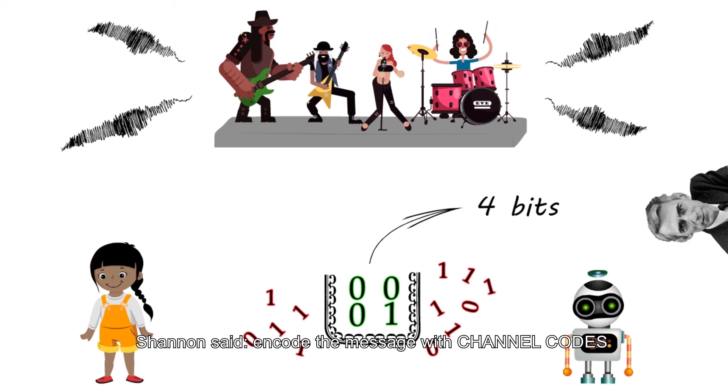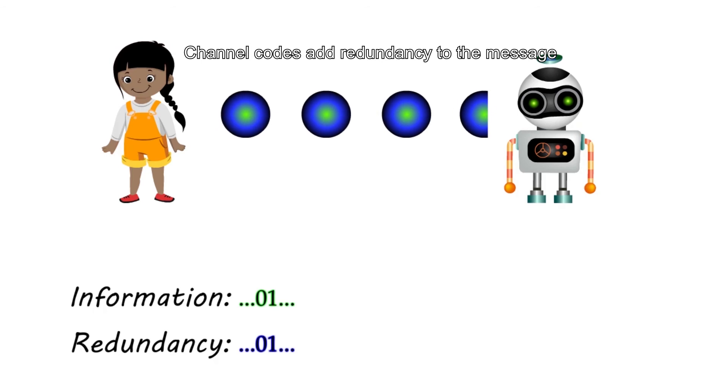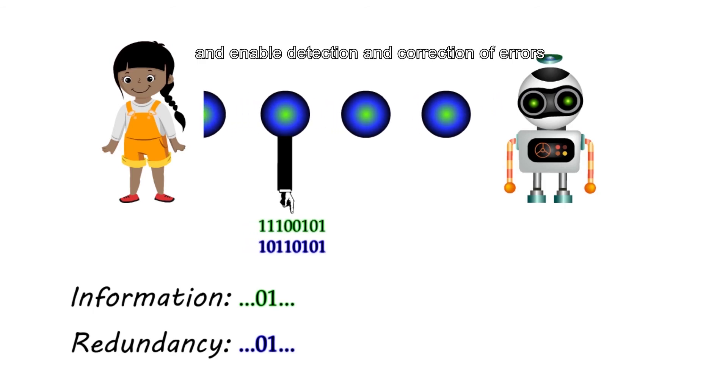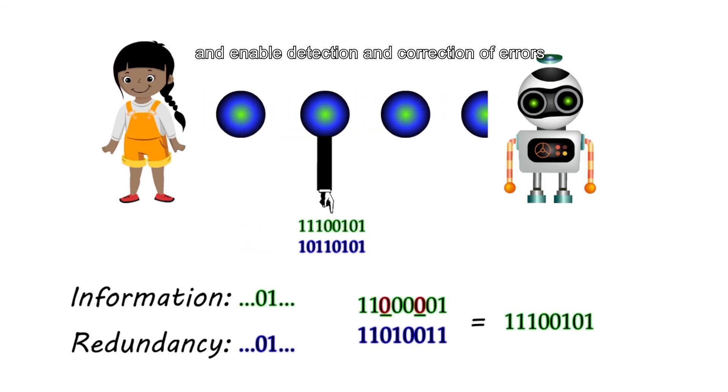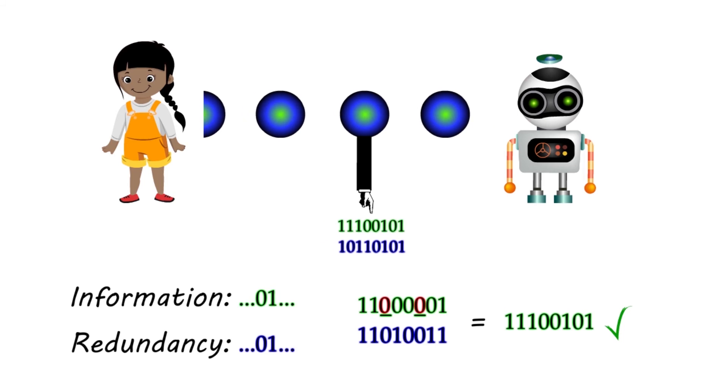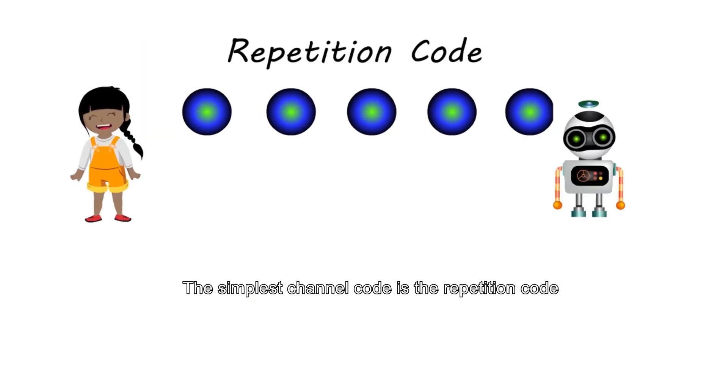So how can we avoid most errors in syllables and reach such capacity? Shannon said, encode the message with channel codes. Channel codes add redundancy to the message and enable detection and correction of errors. The simplest channel code is the repetition code.